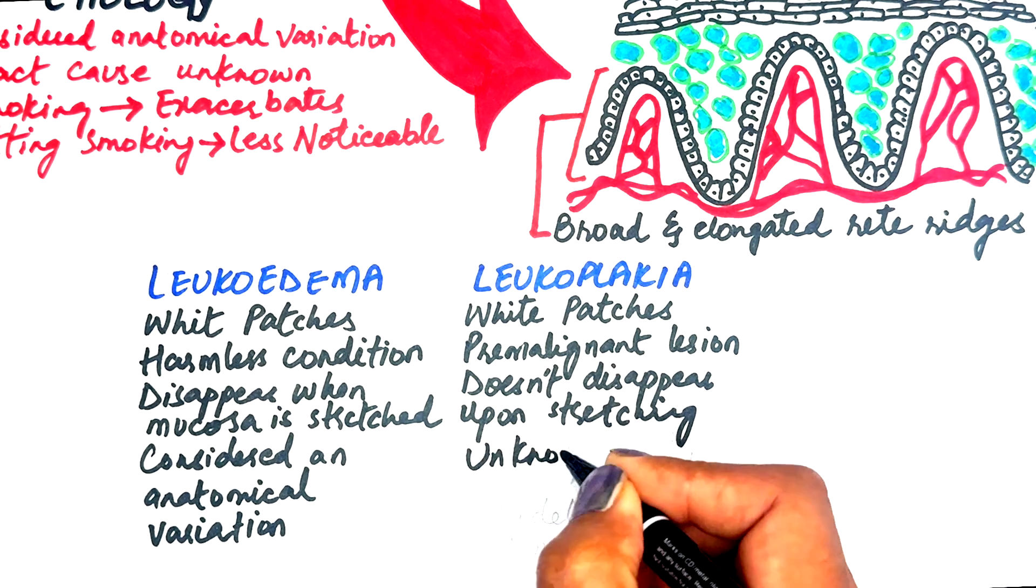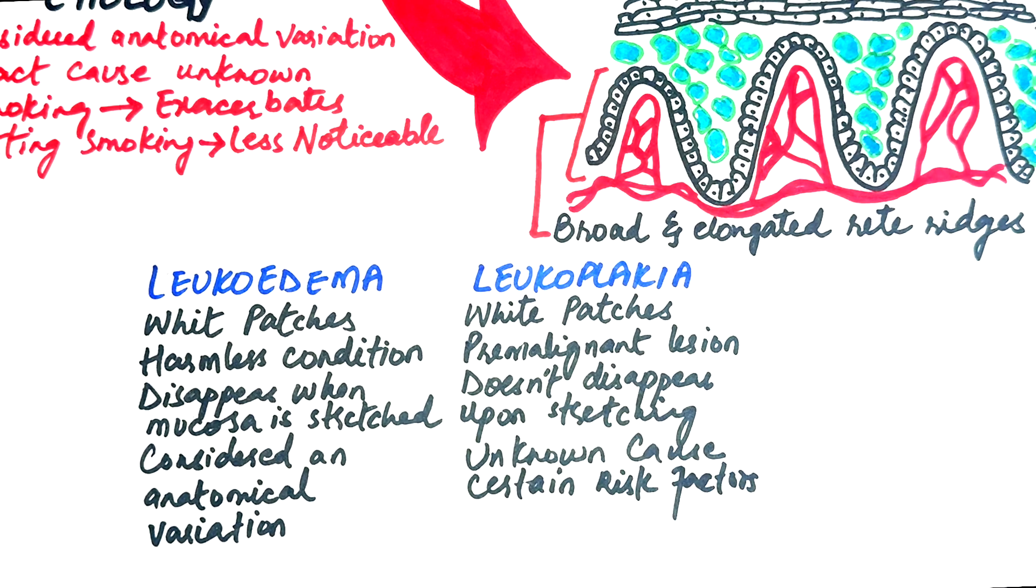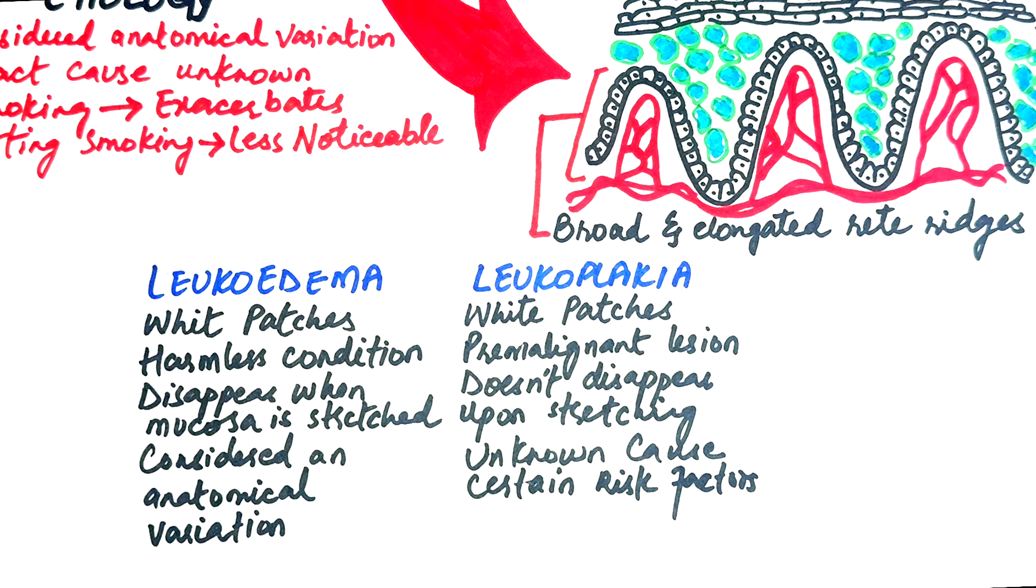The exact cause of leukoplakia is unknown, but certain risk factors contribute to its development, including smoking, chronic candidiasis, mechanical trauma such as malocclusion or ill-fitting dental restorations, and other sources of persistent irritation.